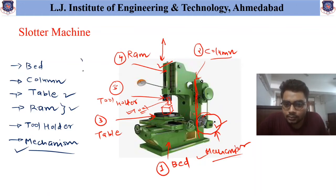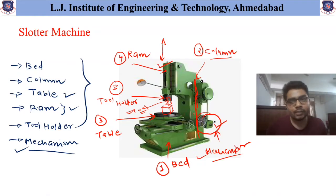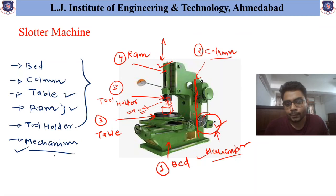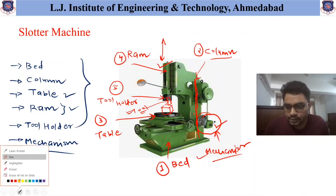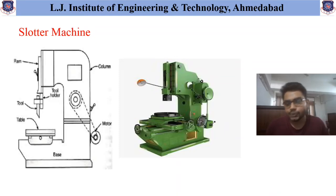These are the common parts available in any machine — whether it is a shaper machine, planer machine, or slaughter machine. I hope it is clear to you which are the main important parts in the shaper, planer, and slaughter machine. Now let us have a look at the simple 2D schematic of the slaughter machine, where you can verify all the details we have discussed from this figure.